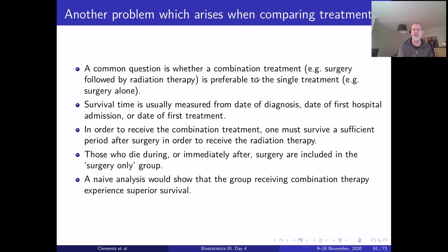A common question is whether combination treatments are preferable to single treatments. Survival is usually measured from date of diagnosis, first hospital admission, or first treatment. However, to receive combination treatment, one must first survive a sufficient period after surgery to receive radiation therapy. Those who died during or immediately after surgery are included in the surgery-only group — a naive analysis would show the combination therapy group experiencing superior survival, a form of immortal time bias.